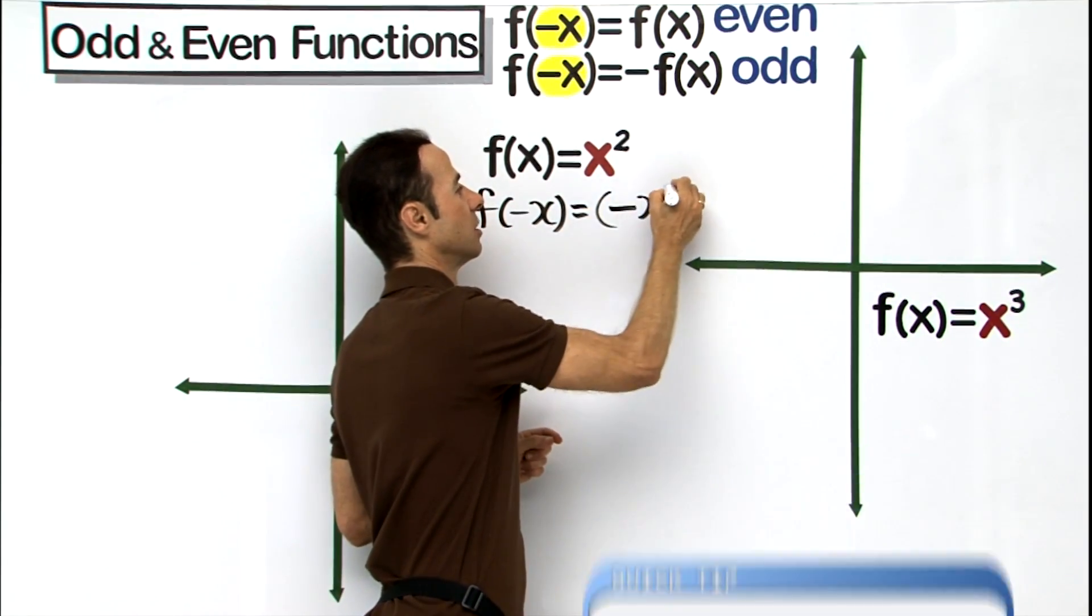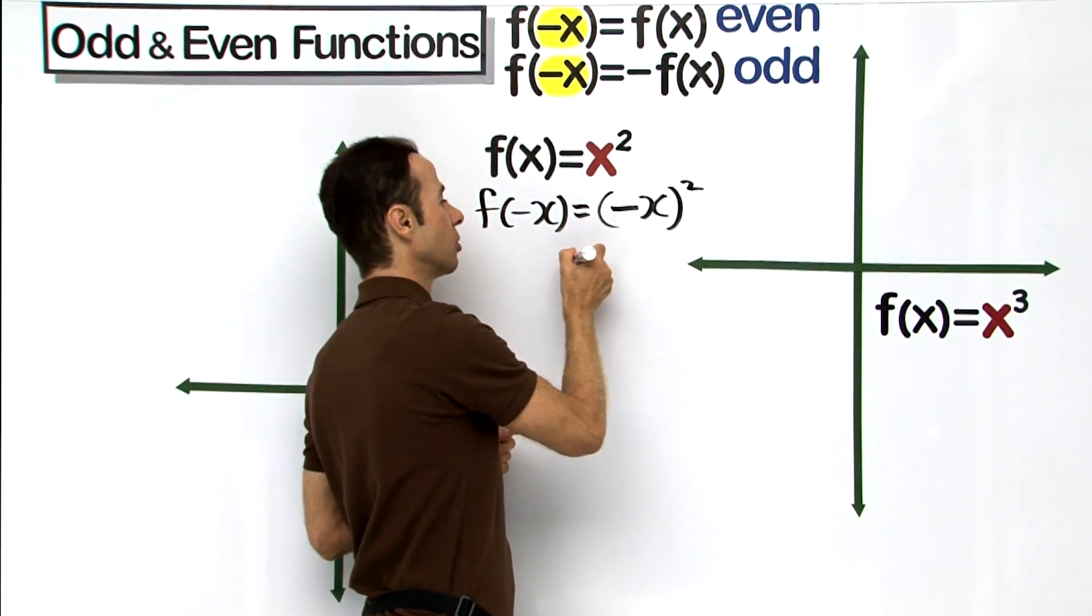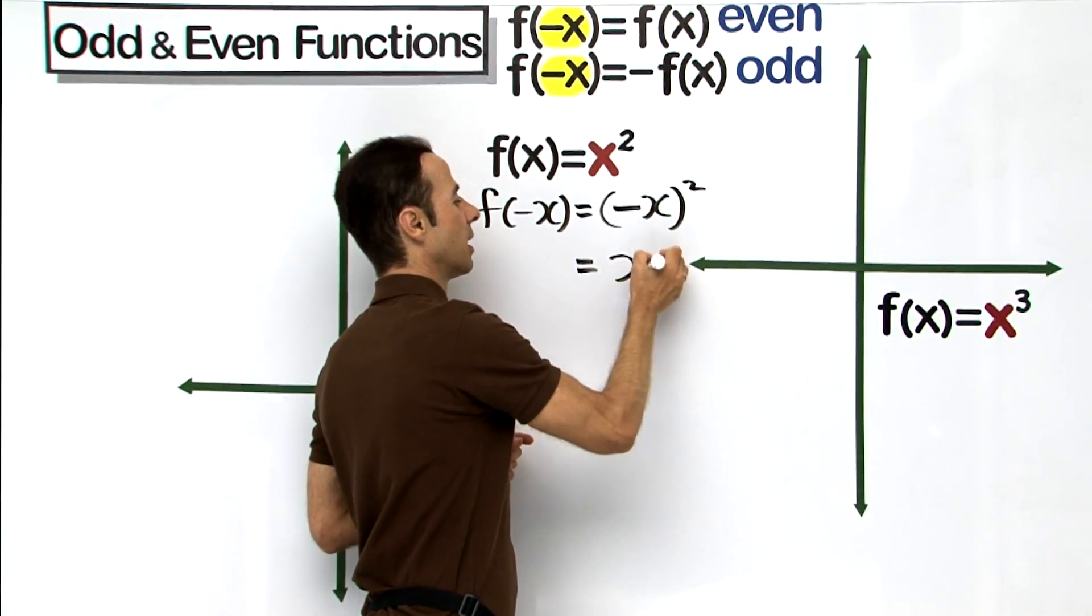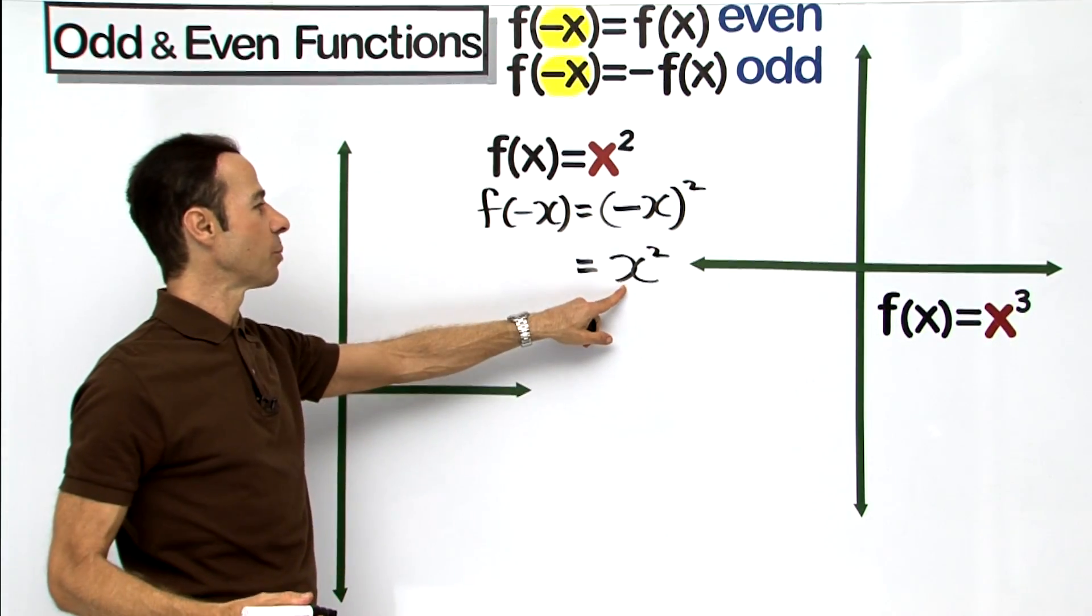Now what is that going to turn into? It's going to turn into x squared because a negative times a negative is a positive. So we end up with x squared.